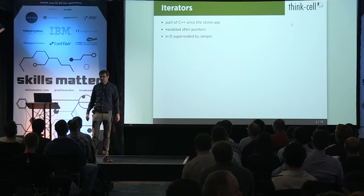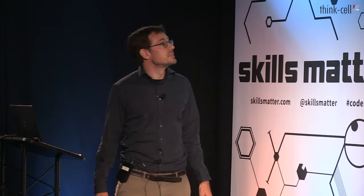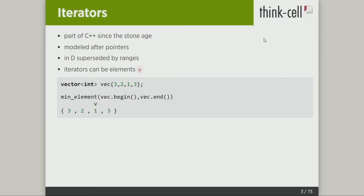I think it's nice to have something that just designates a single position somewhere in the sequence. Iterators can actually do two things, and this is really the core of the talk. Iterators can be elements. So when you have something like this — you have a vector initialized somehow — you say give me the minimum element of that vector. Really, what you're talking about is a single element, one in this case.